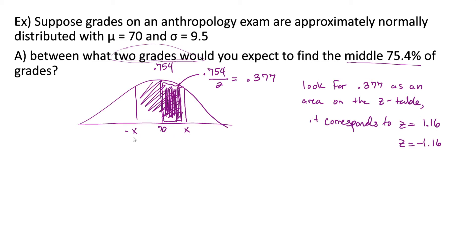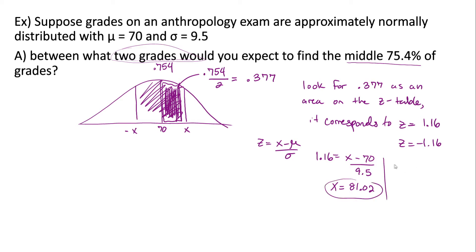To find those specific grades, we use the z-score formula: z = (x − mean) / standard deviation. For z = 1.16: 1.16 = (x − 70) / 9.5. Solving algebraically, x = 81.02. For z = −1.16: −1.16 = (x − 70) / 9.5. Solving algebraically, x = 58.98. So our two exam scores are 81.02 and 58.98.